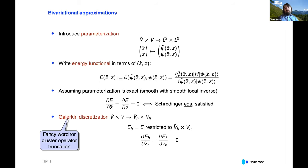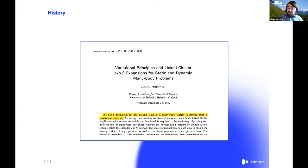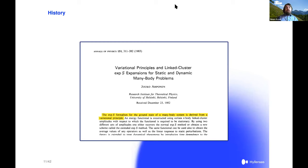I would like to say a little bit about the history of the bivariational principle. It was the Finnish physicist Juhani Arponen who introduced, as I see it, the most general form of the bivariational principle in a seminal treatise on coupled cluster theory in 1983.